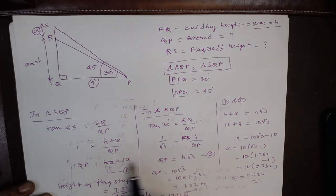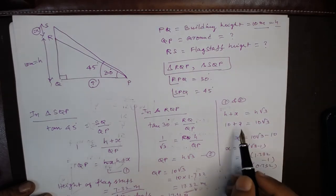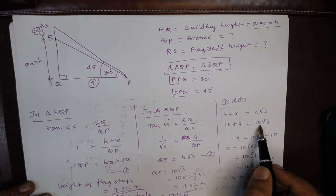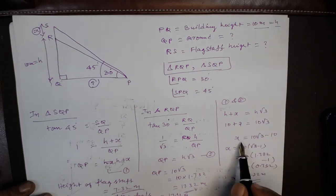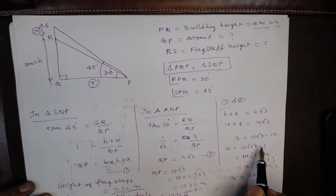So H plus X is equal to H root 3. We know already H, so you can replace this. 10 plus X is equal to 10 root 3. X is equal to 10 root 3 minus 10, that is 10 times root 3 minus 1. 10 into root 3 value is 1.732 minus 1. So 10 into 0.732, that is 7.32 meters. This is the X value.